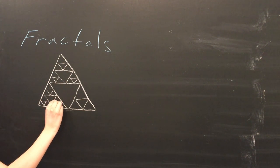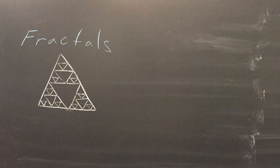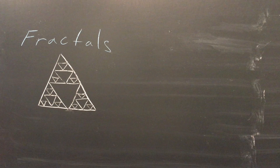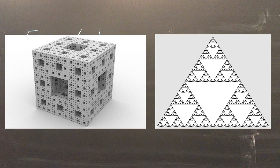If the repeating pattern appears the same at all levels, the fractal is said to be self-similar. Some self-similar fractals that you may be familiar with are the Menger sponge or the Sierpinski triangle.